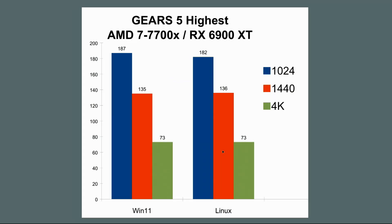Now let's look at Gears 5. At 1080p we got 187 on Windows and 182 on Linux. At 2K, we have 135 for Windows and 136 for Linux. At 4K, we have 73 on Windows and 73 on Linux — essentially identical. I should mention I'm using Windows 11 to test this. Some people may think that's a mistake due to performance differences between Windows 11 and Windows 10 gaming, but I figure most people are going to be gaming with Windows 11 eventually.